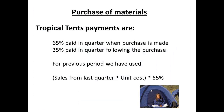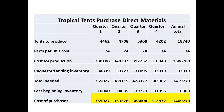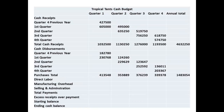We apply a similar treatment to the purchase of materials. Tropical Tents has determined that 65% of payments for purchases are made in the same quarter that purchases are made, and 35% are paid in the quarter that follows. We start by looking at the budget for the purchase of direct materials. These figures are entered to the cash budget with the split of 65% for the current quarter and 35% for the following quarter, and the annual total is also entered.